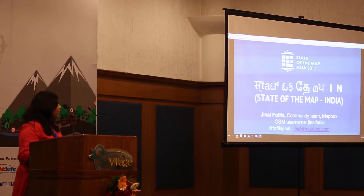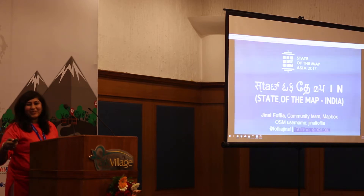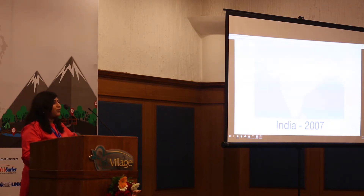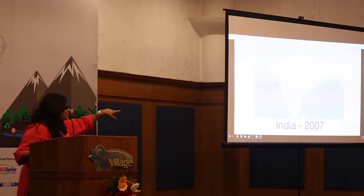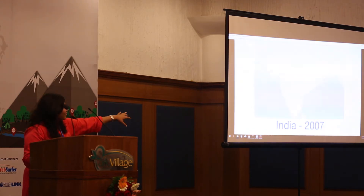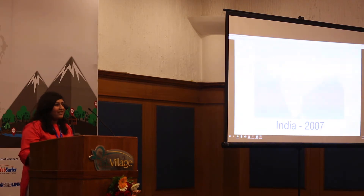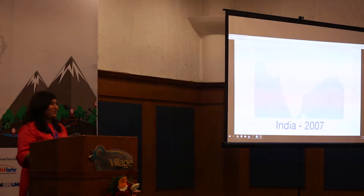So back in 2007, the canvas of India looks blank — there's no data. It sort of marked the beginning of OSM in India. You can see there are small lines in Chennai where Arun Ganesh, also known as PlainMad — known as the map man of India — actually started exploring the domain of OpenStreetMap.